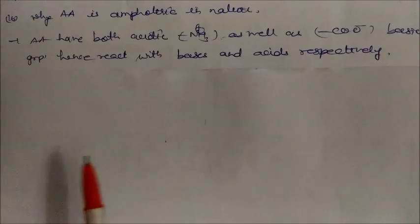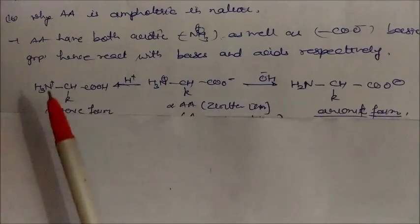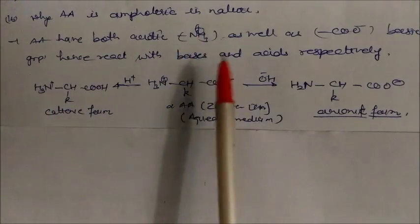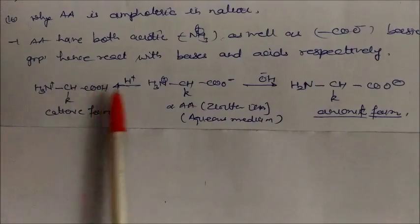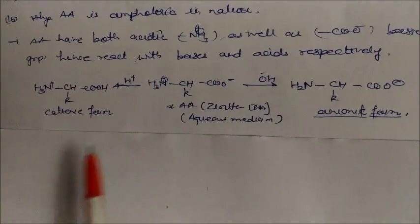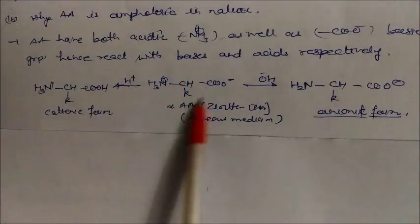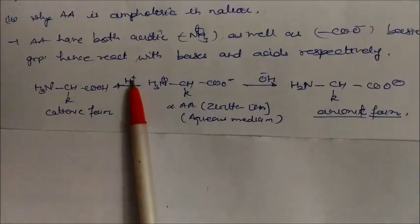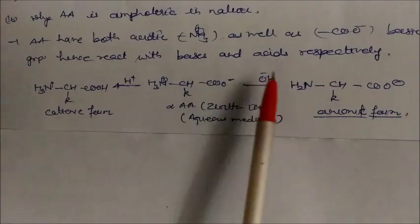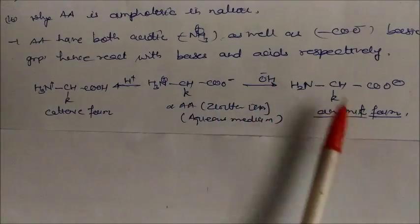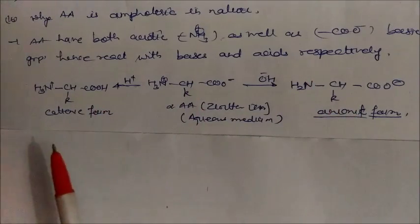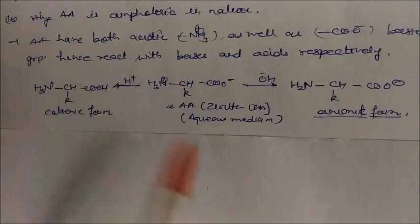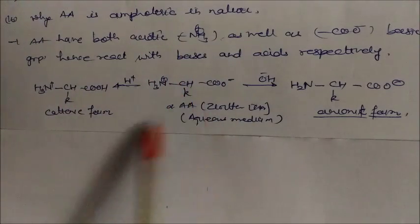Why are amino acids amphoteric in nature (ampholytes)? Amino acids have both acidic (NH₃⁺) and basic (COO⁻) groups present. Hence they can react with both acids and bases. In acidic medium, the zwitterion becomes a cation (migrates to cathode); in alkaline medium, it becomes an anion (migrates to anode). That's why amino acids are called amphoteric or ampholytes.